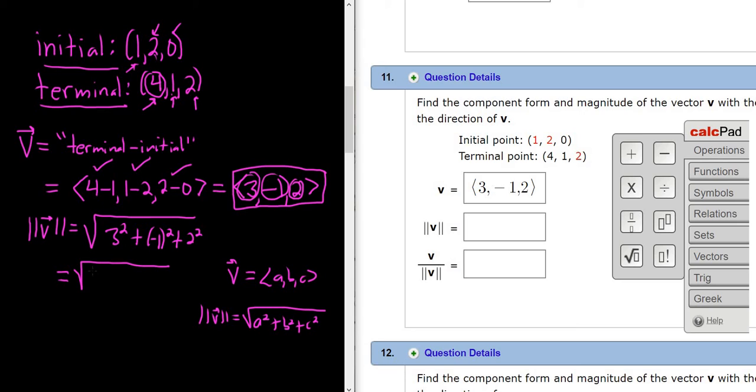So this is the square root. This will be 9 plus 1 plus 4. Right? 3 squared is 9. Negative 1 squared is 1. 2 squared is 4. So we get the square root of 14.